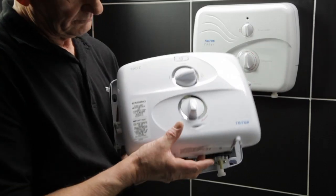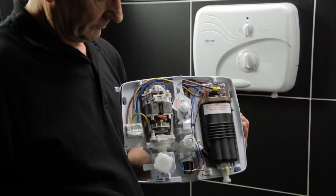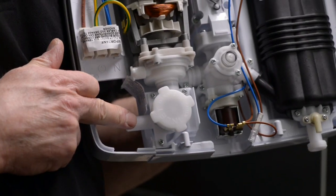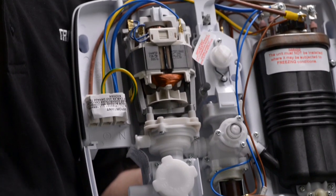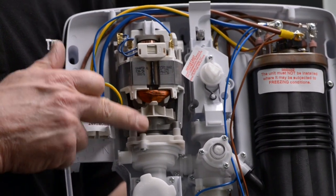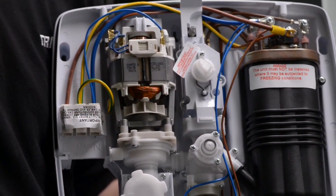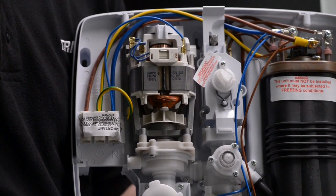Let's take a closer look. A gravity-fed cold water supply must be connected to the inlet of the shower. The T90Z integral pump boosts the water pressure to produce an invigorating shower at flow rates up to 8 litres per minute.